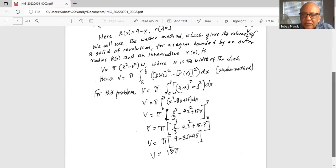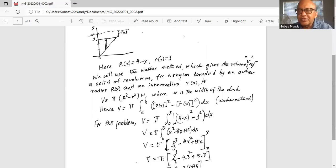So 3 cubed divided by 3 for x cubed by 3 is 3 square which is 9, minus 4 times 9 is 36 plus 15 times 3 is 45. So 45 plus 9 is 54 minus 36 is 18. 18 pi is the final answer for the volume. So I'll stop here today.